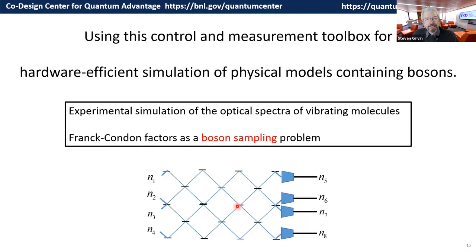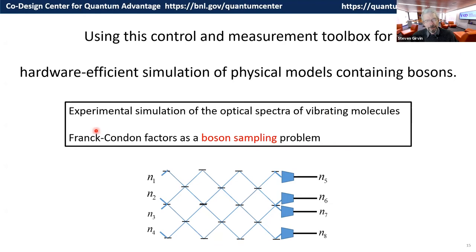Now we'll use this control and measurement toolbox for hardware-efficient simulation of physical models containing bosons. In particular, we'll do an experimental simulation of the optical spectra of vibrating triatomic molecules — measuring the so-called Franck-Condon factors in the spectrum — as a Gaussian boson sampling problem.